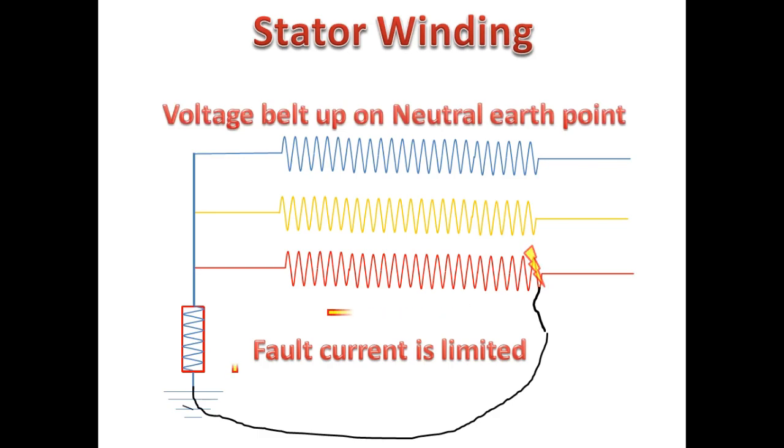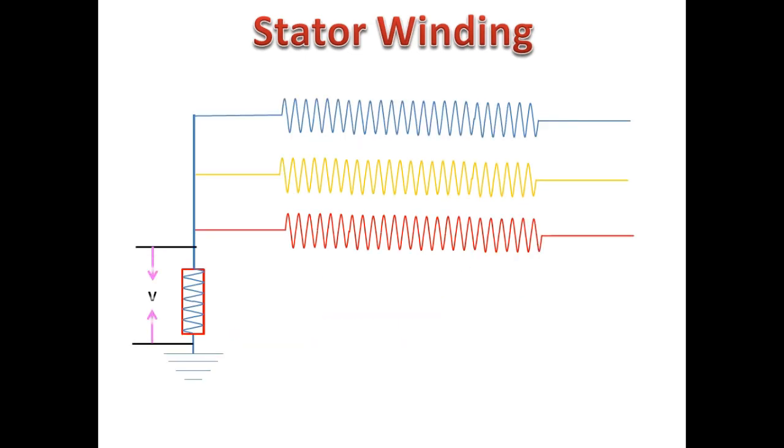Now it's clear how voltage is developed across this residual path or high impedance path during the fault condition. If we check the voltage across neutral to ground during normal healthy condition, the potential difference will be zero.